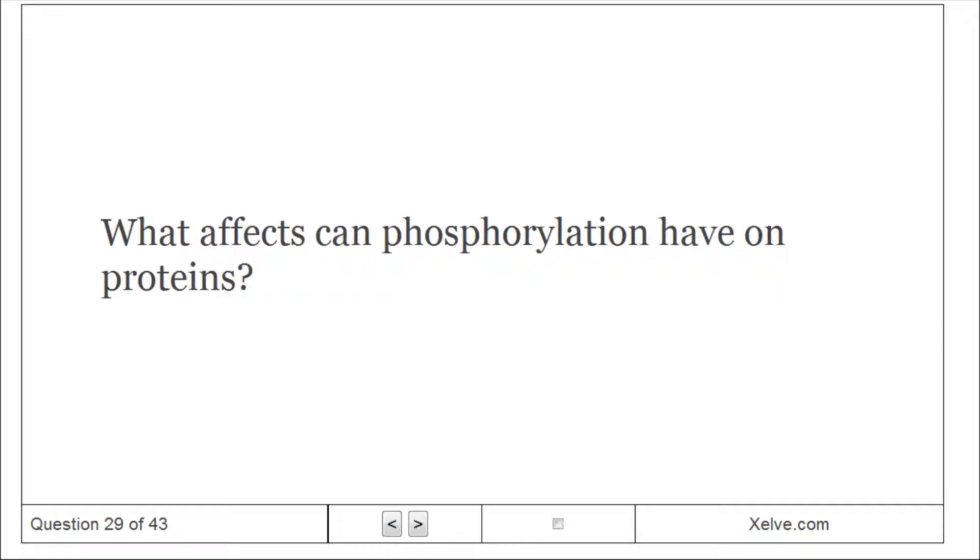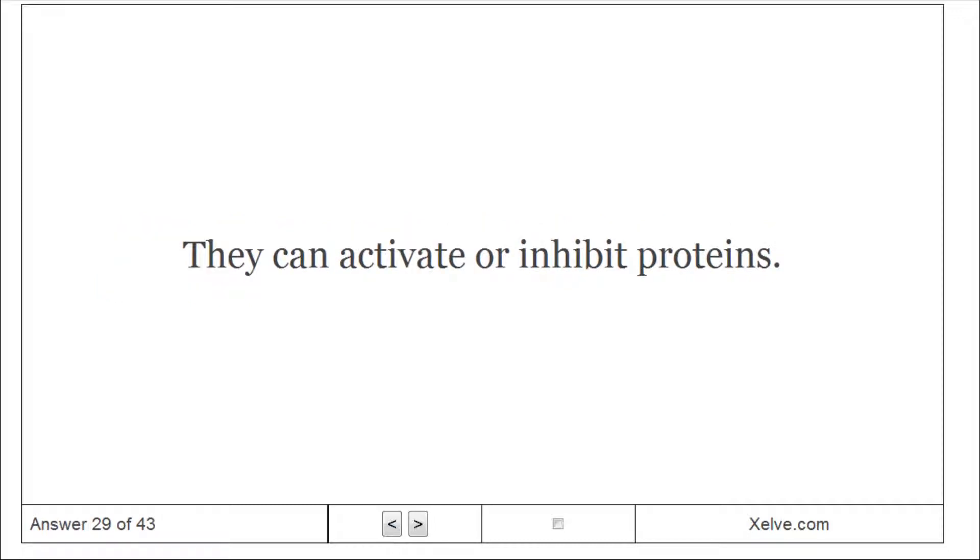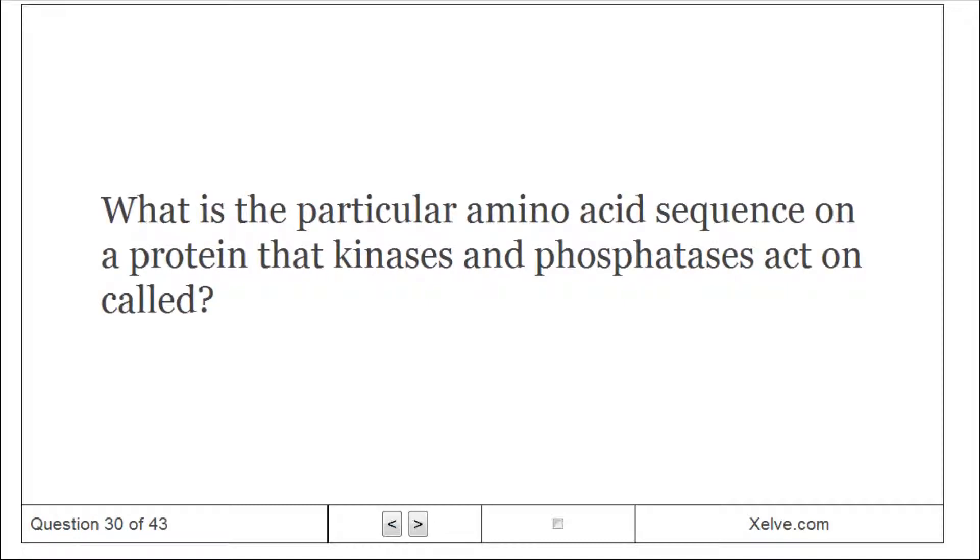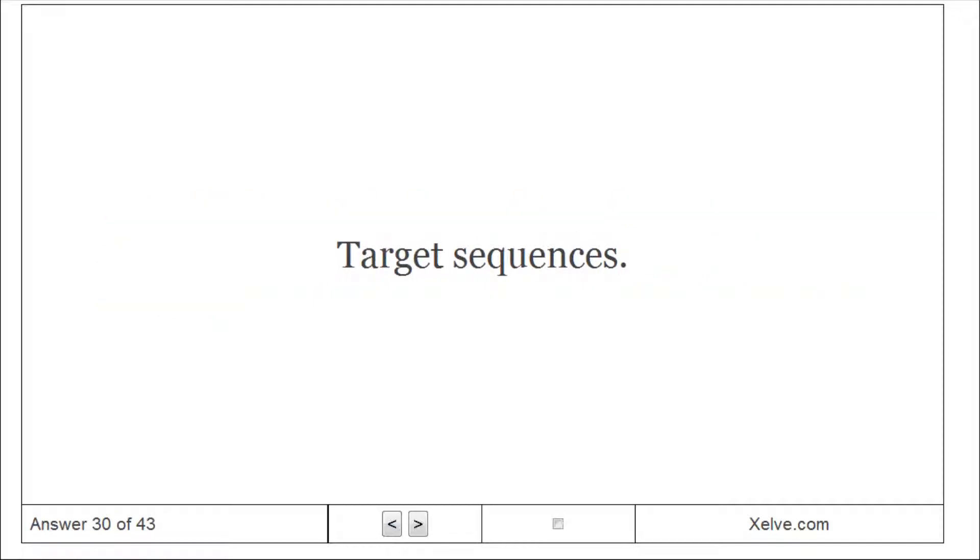What effects can phosphorylation have on proteins? They can activate or inhibit proteins. What is the particular amino acid sequence on a protein that kinases and phosphatases act on called? Target sequences.